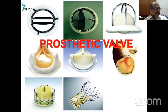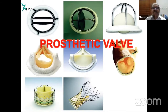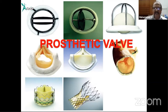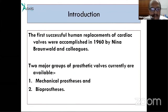Regarding prosthetic valves: valve replacement is performed when a native valve is damaged — for example, mitral stenosis, mitral regurgitation, aortic stenosis, or aortic regurgitation. The two major types of prosthetic valves are mechanical prosthesis and bioprosthesis.